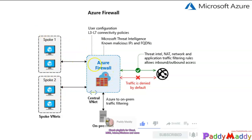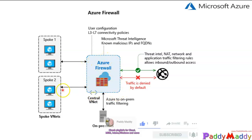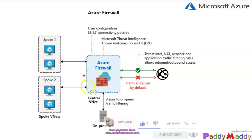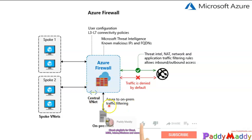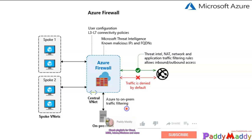If you have two different VNets, communication will go through the Azure Firewall, and communication between servers within those VNets will also be established with the help of Azure Firewall. To do this you need to rely on your routing tables - Azure routing tables which you create to divert traffic through the Azure Firewall. Azure Firewall also supports on-premises traffic management.